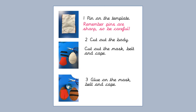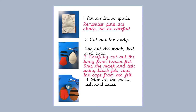For the next sentence, number two, I had 'cut out the body, cut out the mask, belt and cape.' That's all right, but I think I could rewrite it with a bit more information. Now if I was at school I would cross this out with a ruler, but because I'm on the computer I've just rewritten it in a different colour so I know what are my new bits. For number two I'm going to change it to: 'carefully cut out the body from brown felt, snip the mask and belt using black felt and the cape from the red felt.' I've added in the colours of the felt to give a bit more detail, and because I used the word 'cut' already, I decided to swap that to 'snip.' There was nothing wrong with what I did last week, but I thought I could put a bit more in to make it more helpful.